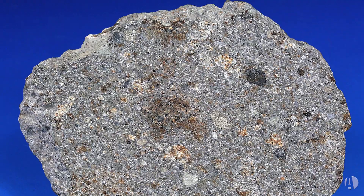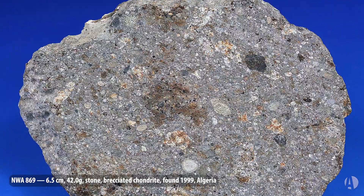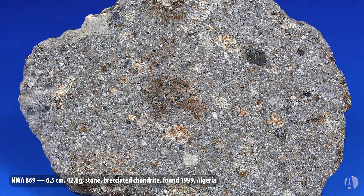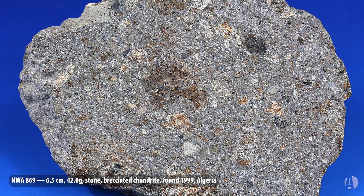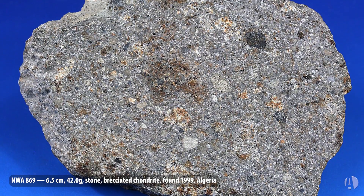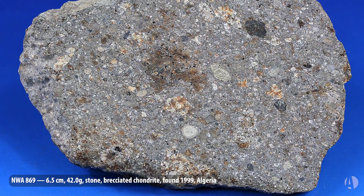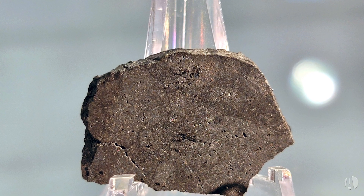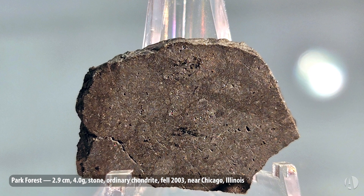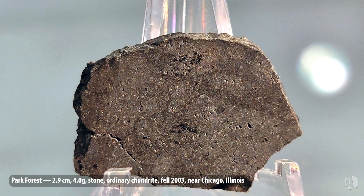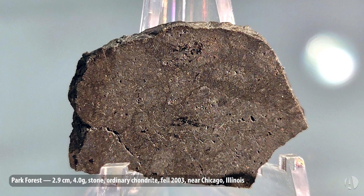NWA 1869 is another good stone — a so-called brecciated chondrite. You can see in its sliced composition that it's a whole bunch of stuff that is mixed up and crystallized, and that's what brecciated means. It was found in 1999 in Algeria. A final stone example is Park Forest, which very famously fell in 2003 near Chicago, Illinois — an ordinary chondrite and just a beautiful object.